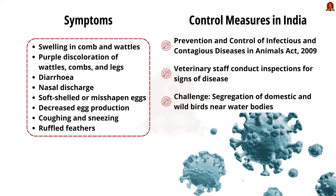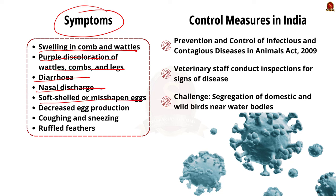Symptoms of bird flu in infected birds include swelling in the comb and wattles, purple discoloration of the wattles, combs and legs, diarrhea, nasal discharge, soft-shelled or misshapen eggs, decreased egg production, coughing and sneezing, and ruffled feathers. These are not very critical to memorize, but we should have an idea about the symptoms.